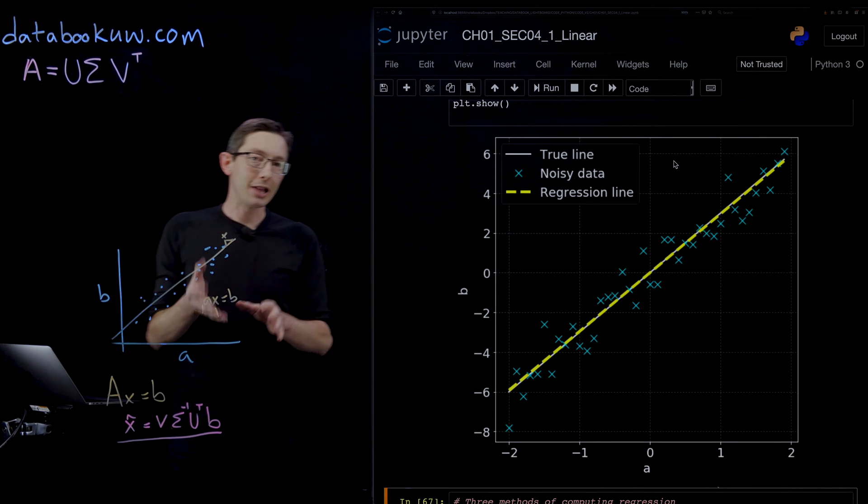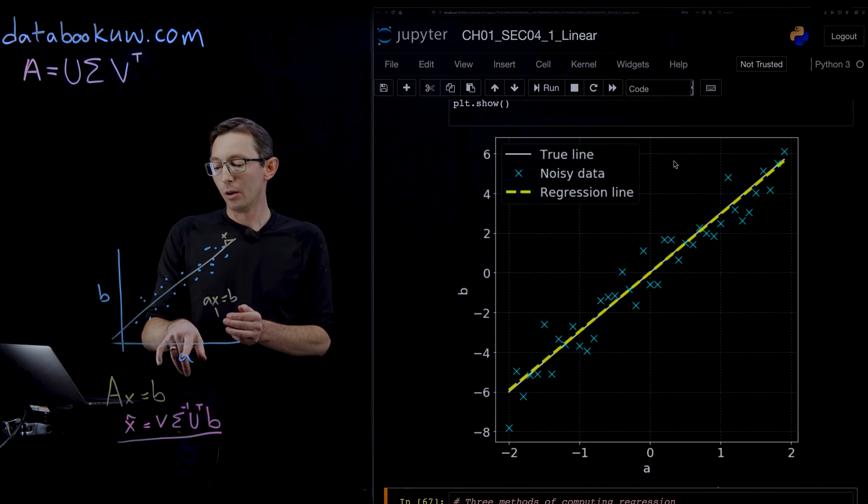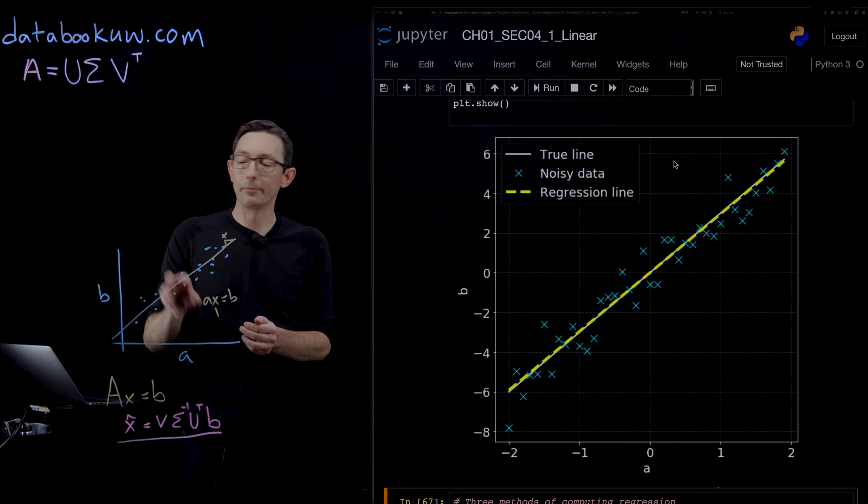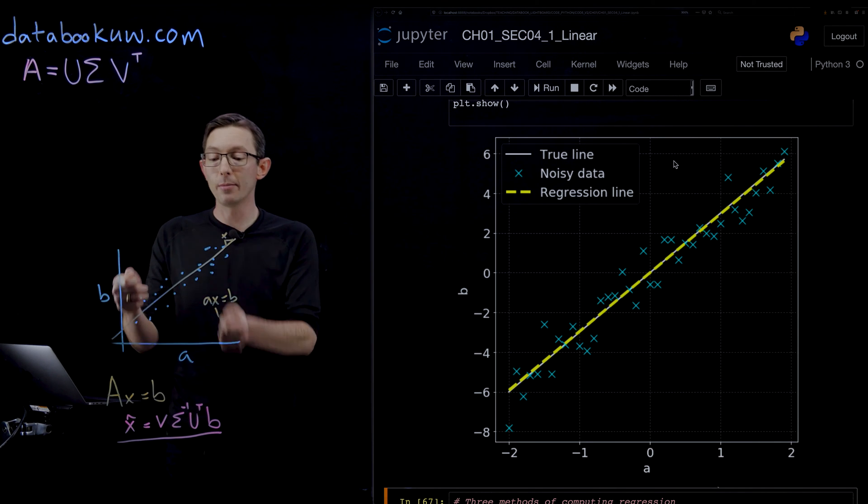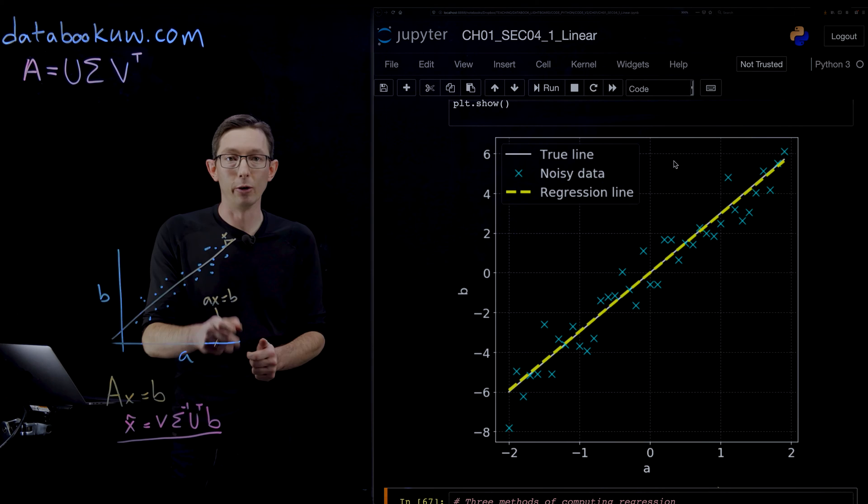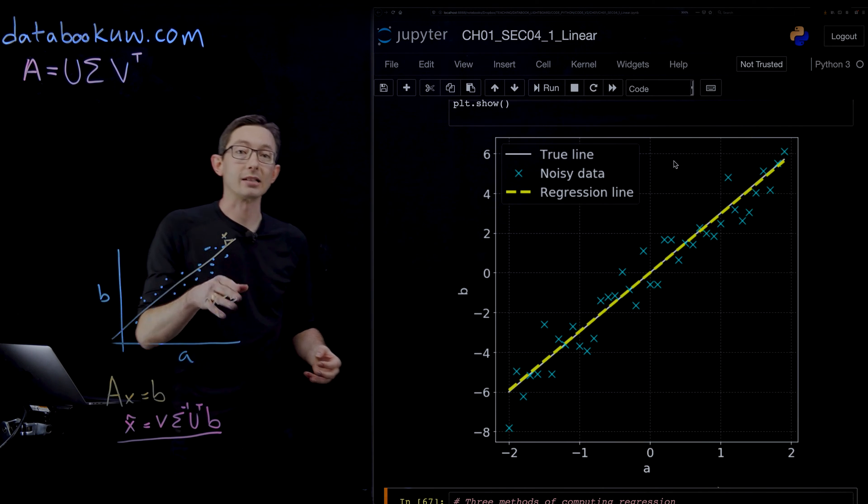Welcome back. In the last lecture we cooked up a simple linear regression example with one input variable A and one outcome variable B where we knew the answer. We knew the model was linear relating A and B, we knew the slope, and from noisy data we saw that we could recover a pretty good approximation of that slope.